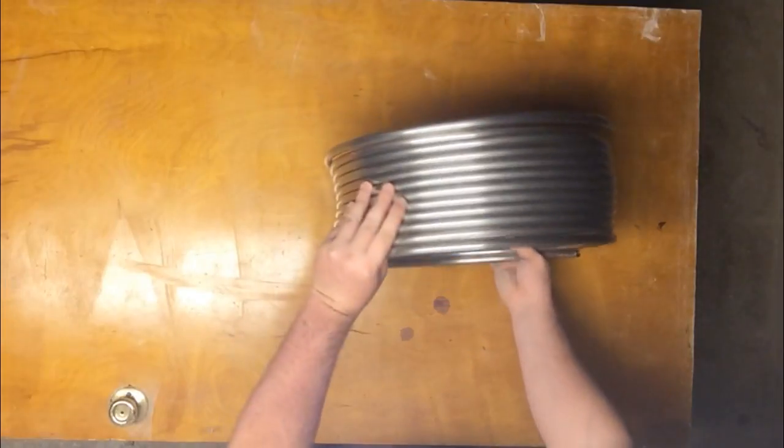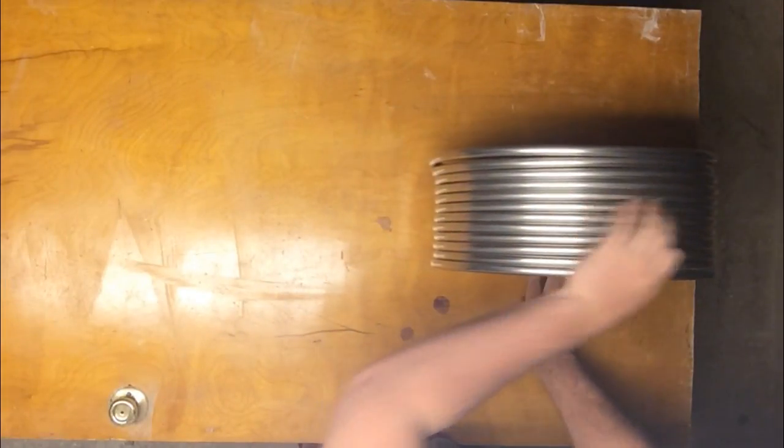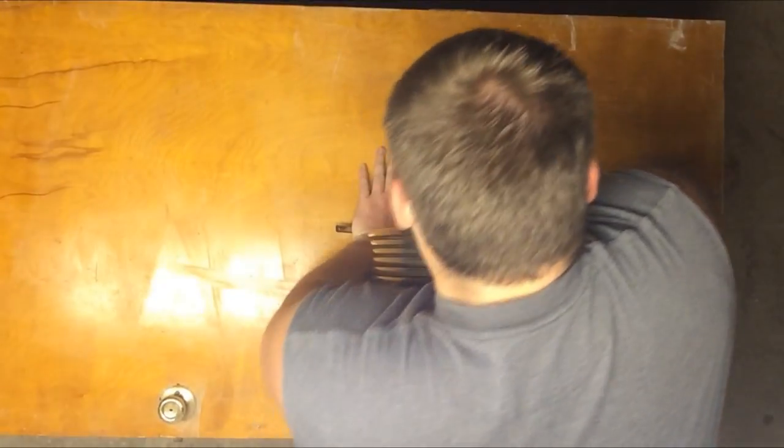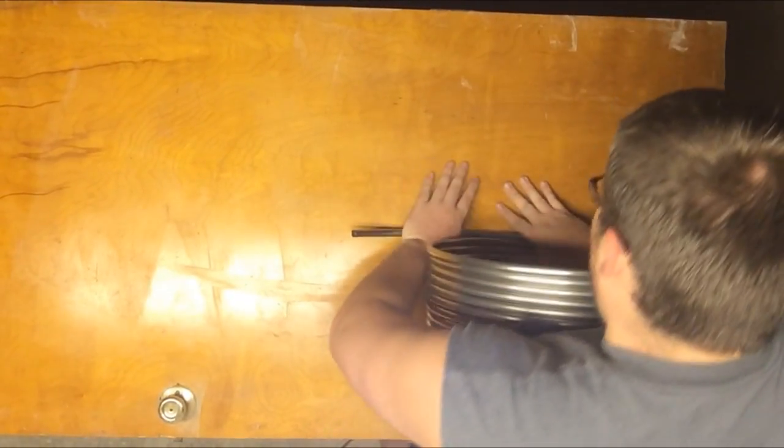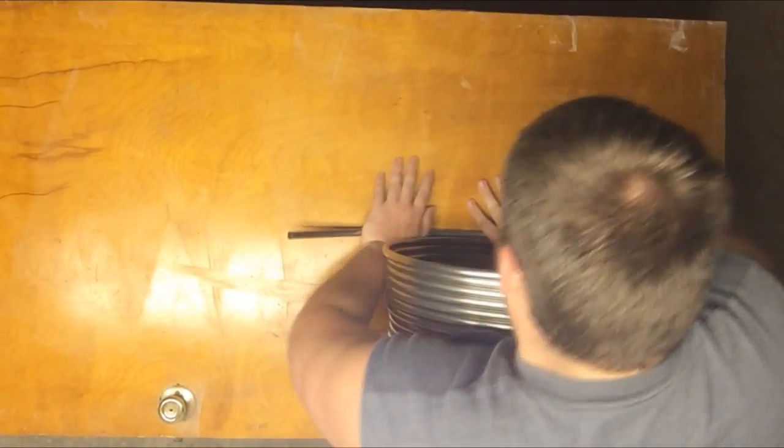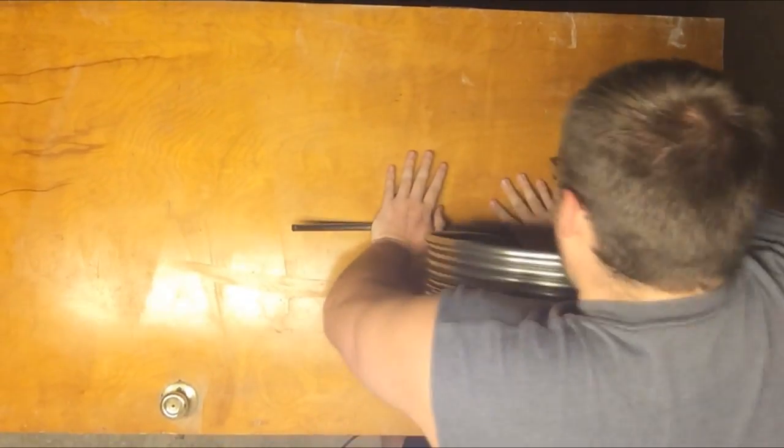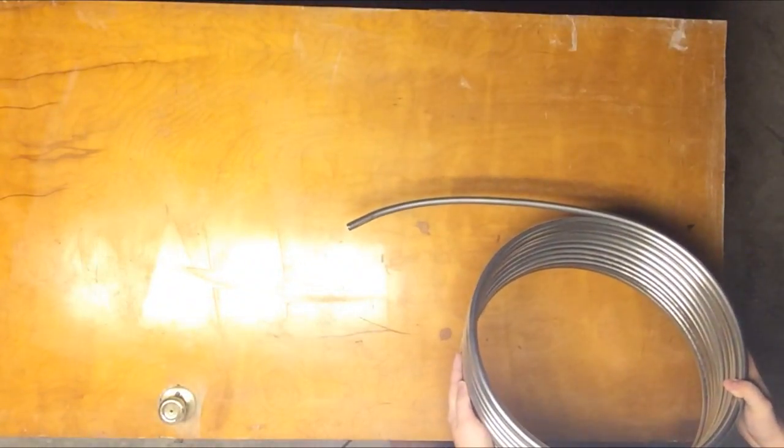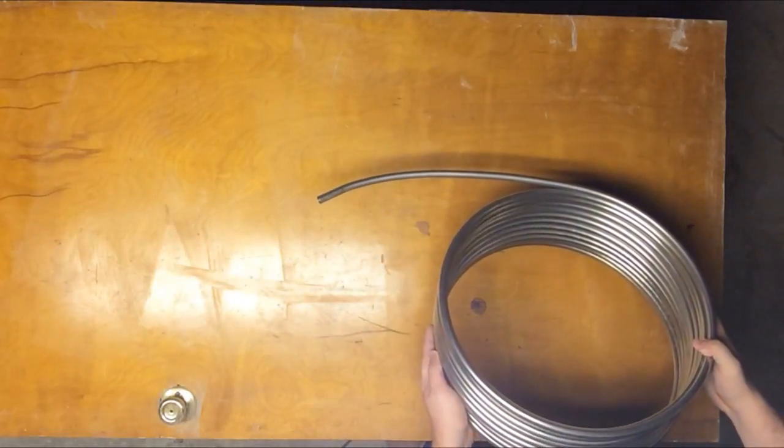The first modification you'll need to make is you'll need to unroll each leg of the coil approximately two and a half feet. To do this you'll just need to press down with some force and literally unroll the coil. You don't want to just try to bend it because you could put a kink in it and then ruin it and the purpose of this is to keep the hose connections away from the fire.